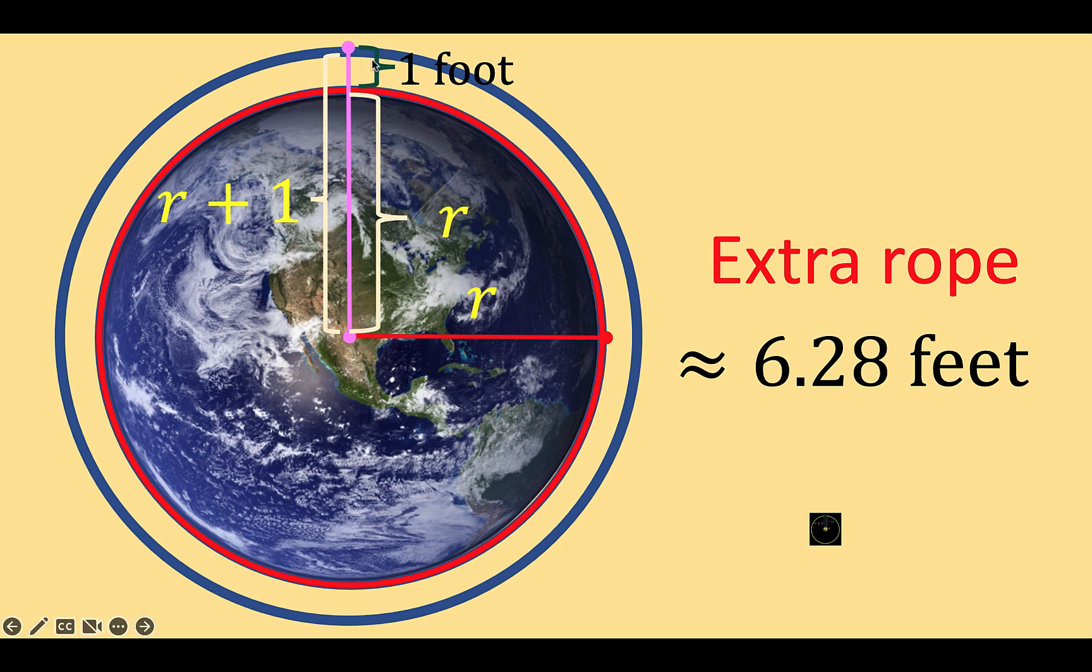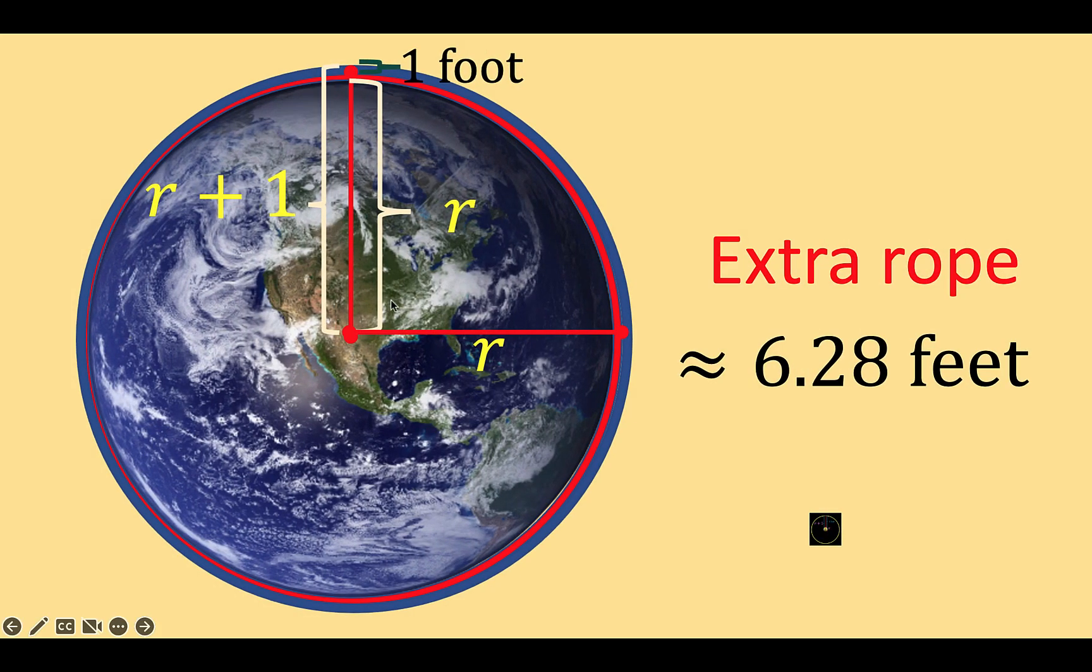Also, notice that this one foot, when compared to the actual radius of the planet Earth, would not be raised this much. In fact, the proper representation should be similar to this. You barely move the blue circle above the red circle. And so, the two circumferences are basically almost equal to each other. And their difference is only this 6.28 feet.